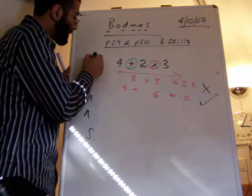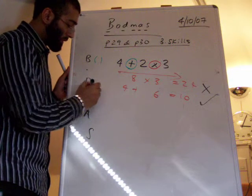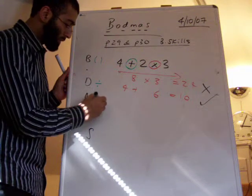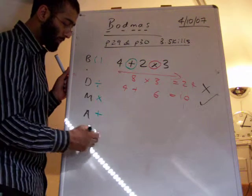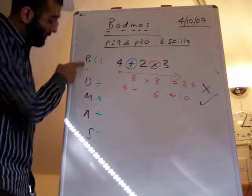Now your B stands for brackets. Your D stands for division. M stands for multiplication. A stands for addition. S stands for subtraction. Now when we do maths, we do them in this order.